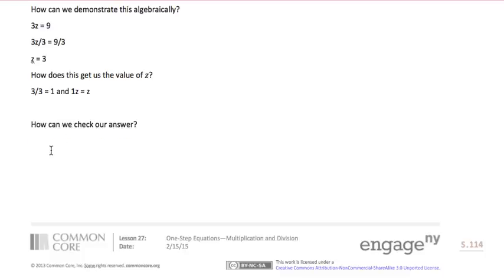Now we can check our answer by substituting. We're going to substitute 3 times 3, because that's the value we found for z, equals 9. And 3 times 3 is 9, so it is a true equation. We found the correct answer.